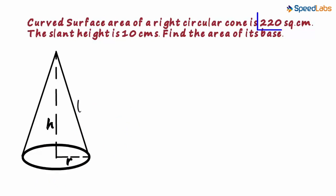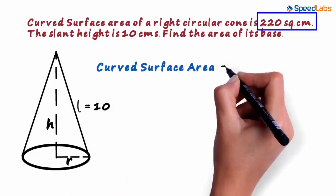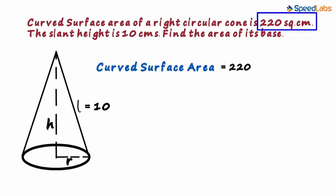We have been given the curved surface area and the slant height. The only direct information we have is the slant height. So L is equal to 10 centimeters. We have been given that the curved surface area is 220 square centimeters. We haven't been asked for the volume or the surface area. We have just been asked for the area of the circular base.